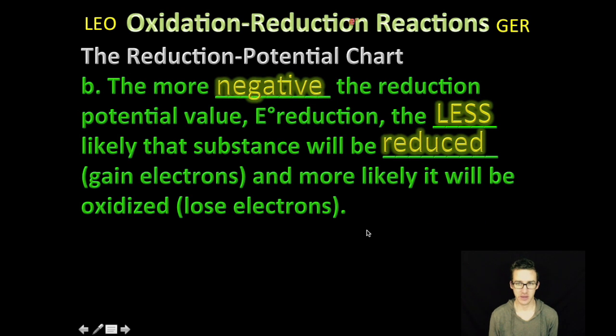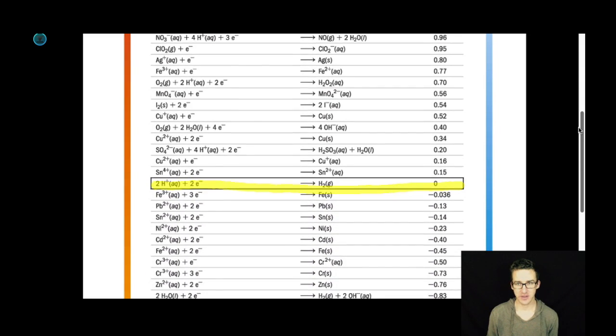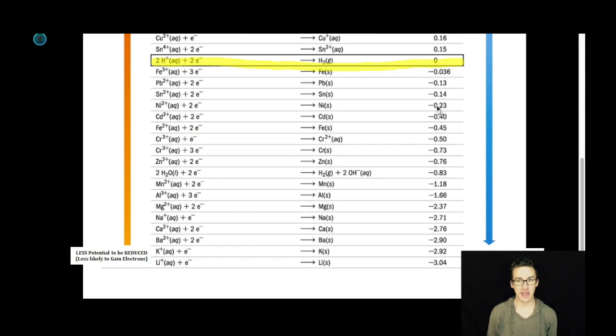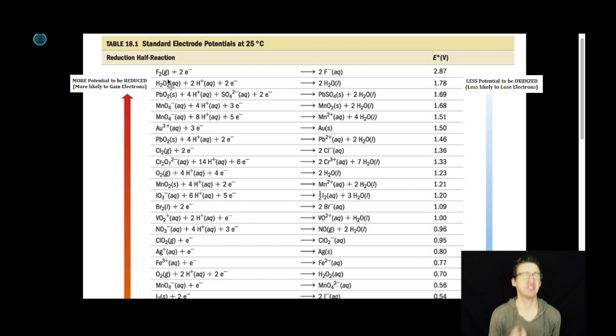The more negative the reduction potential, on the other hand, the less likely that substance will be reduced. The less likely it will gain electrons and the more likely it will be oxidized. Now we're going to take a stroll down the bottom portion of this chart and notice our reduction potentials become negative. What that tells me is these things are less and less likely to gain electrons. Their reduction potential - their potential to gain electrons, their potential to be reduced - gets more and more negative. So it's like saying, 'Yo, lithium, you have like no potential in life to be reduced. Fluorine, you have so much potential.'